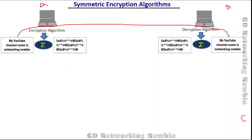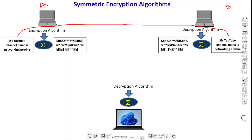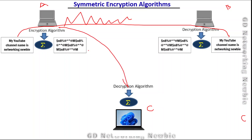Now in this encryption and decryption scenario, the problem is that if there is any third user with the right decryption algorithm, and somehow that third user — let's say user C — is able to receive that message. This could happen over a wireless channel, or even a wired connection where they can tap into the wire. With the right decryption algorithm, they can also recover the same message that the actual destination was able to recover, so there is a security problem in this case.